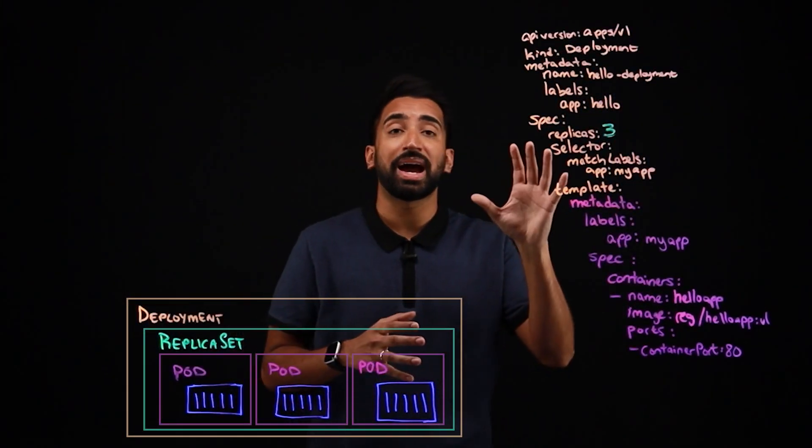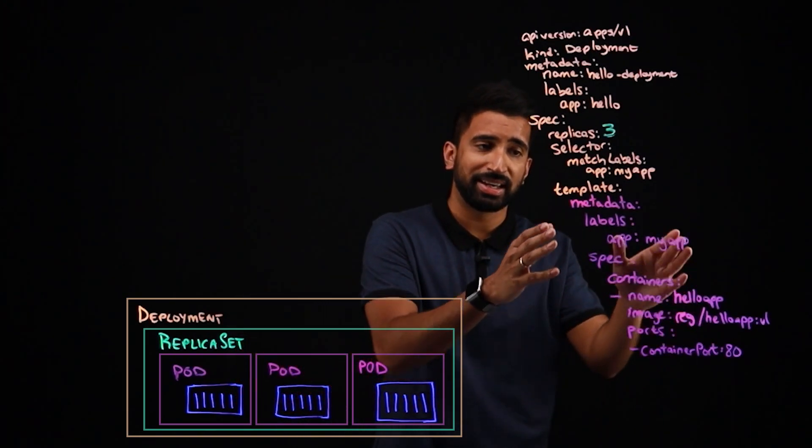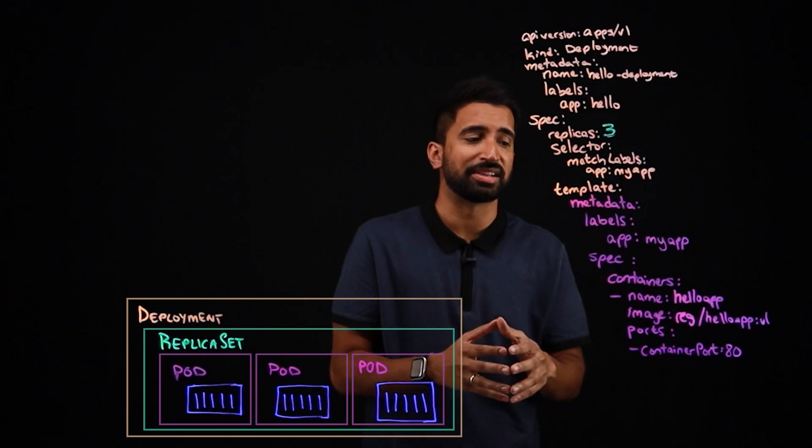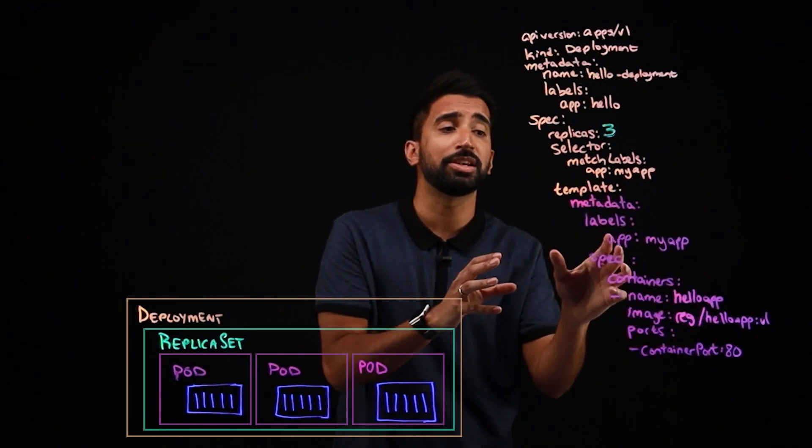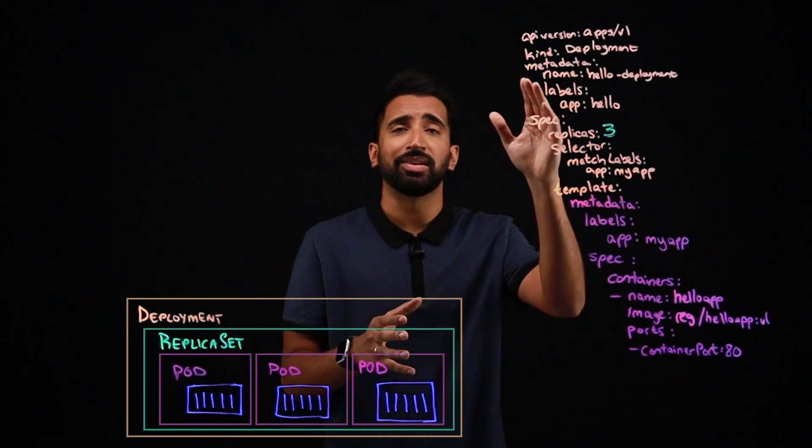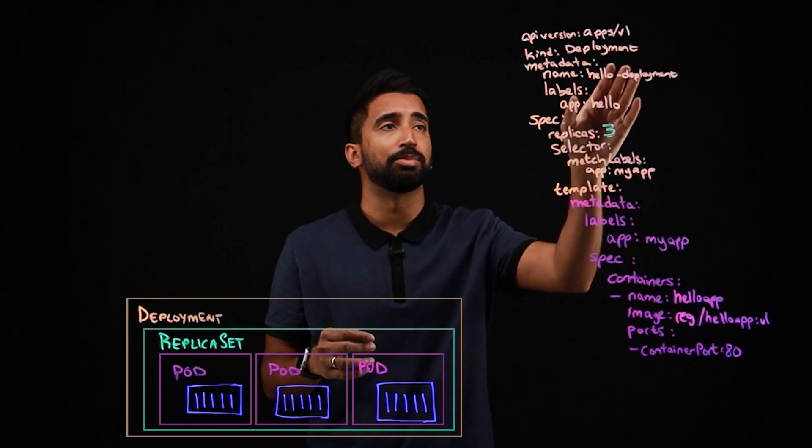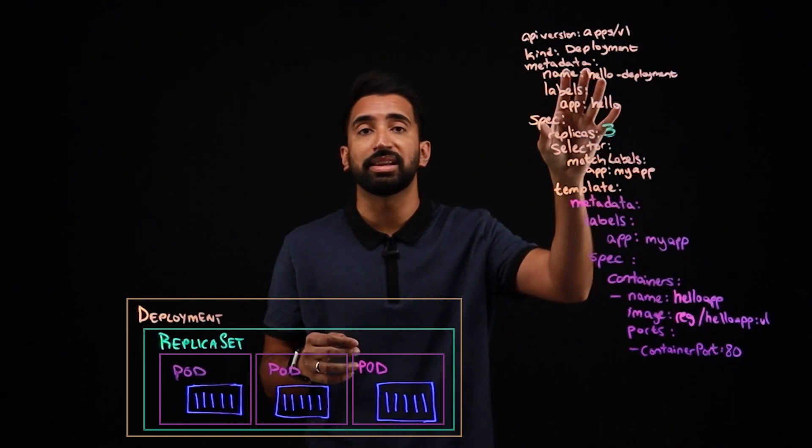Now that we have this Kubernetes deployment YAML written out, one of the first things you'll likely notice is that a lot of it's the same from the pod specification. And that's because the deployment uses it as a template for creating the pods. Now let's take it from the top. There's an API version. Again, the kind of object is deployment, the metadata to uniquely identify it.